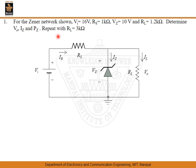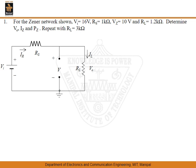We also have to find out V0, IZ, and PZ at different values of load resistance. Initially we find these at RL equal to 1.2 kilo ohm, and then we repeat with RL equal to 3 kilo ohms. Let's start with the first value of load resistance when RL equals 1.2 kilo ohm.